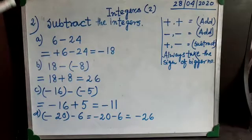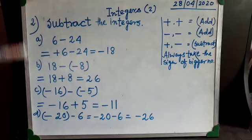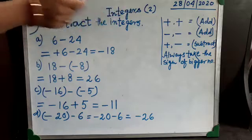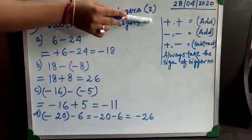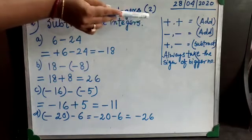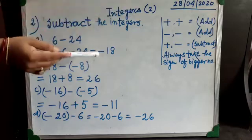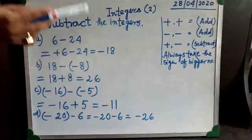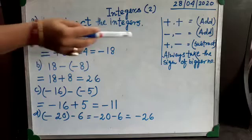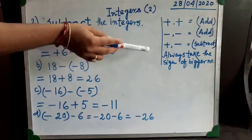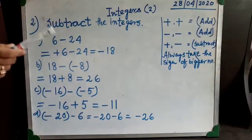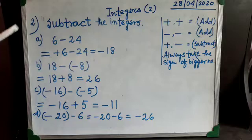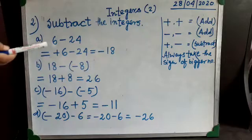Now I am going to show you how to subtract integers. The rules are the same. If both signs are the same — both plus — we add them. If both integers have a minus sign, we also add them. If the integers have different signs — one plus, one minus — we subtract them. And the main thing: don't forget to take the sign of the bigger number.